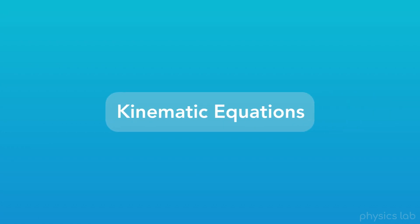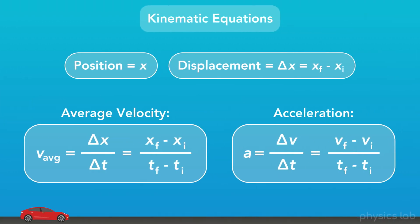Let's cover the last two kinematic equations that we'll need when we're studying the linear motion of objects, and see how we can apply them to both horizontal and vertical motion. Just as a quick reminder, here are the kinematic equations for position, displacement, velocity, and acceleration that we learned in the last video. These equations are what we might call the definitions of position, velocity, and acceleration. The next equations that we'll learn are really useful, and they combine all three of these.